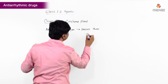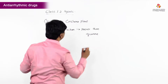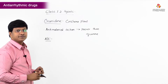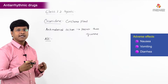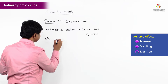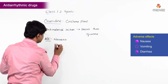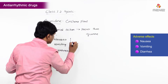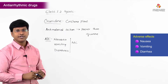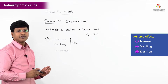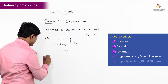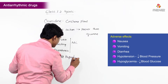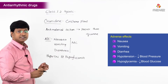Now the adverse effects of quinidine include nausea, vomiting, and diarrhea — these are the most common side effects of this drug. The other important adverse effects are that it can cause profound hypotension and hypoglycemia, that is, a decrease in blood glucose levels.